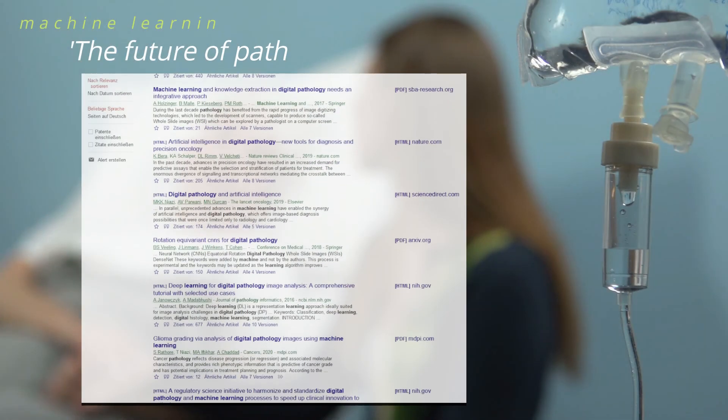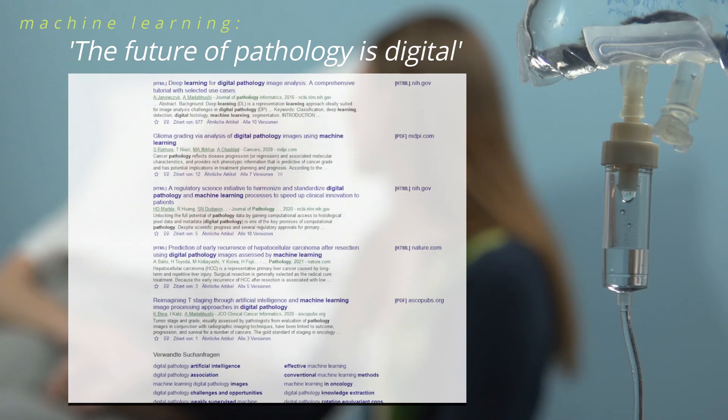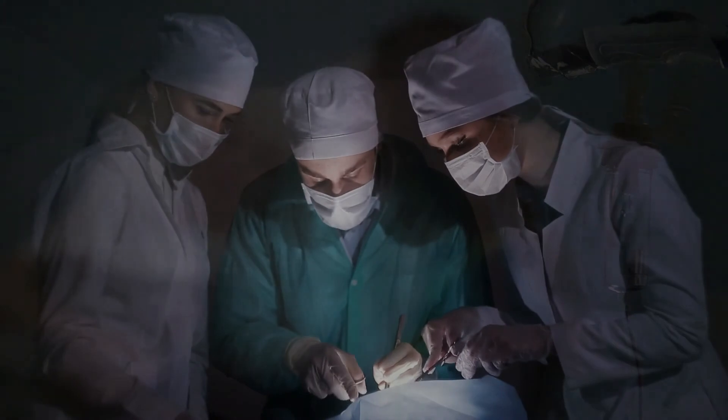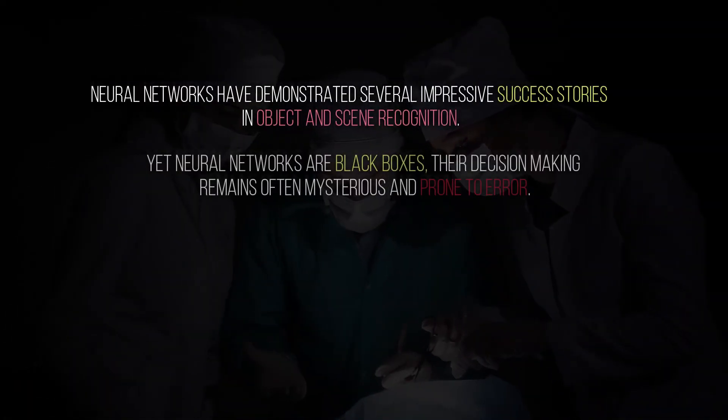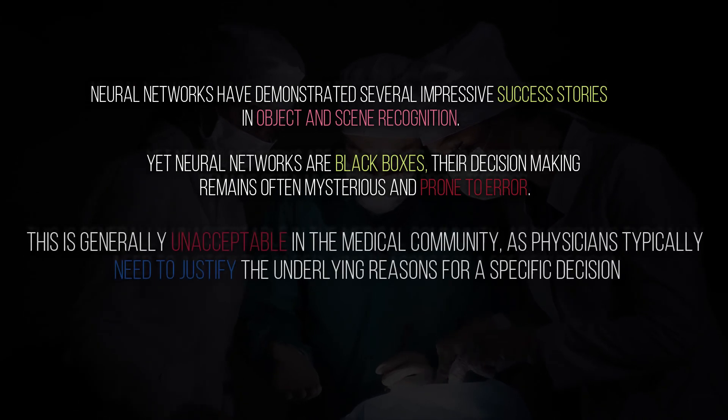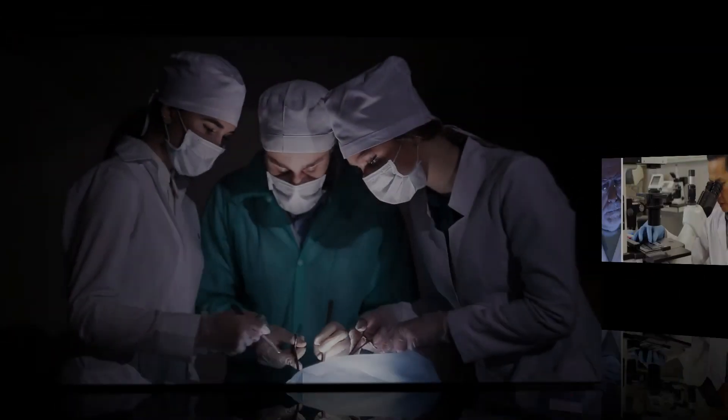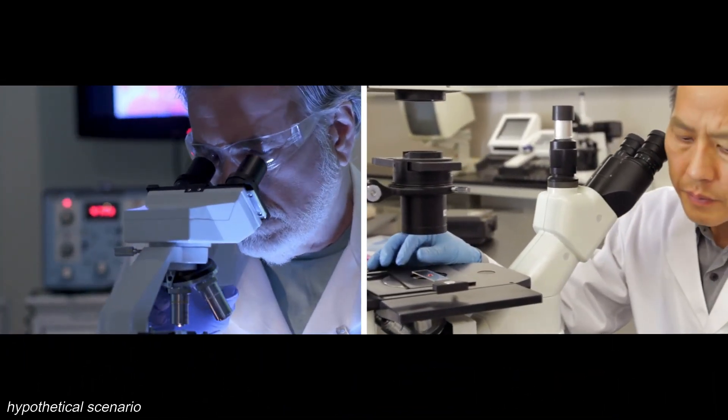Even samples that were held back from the training data and thus unseen by the algorithm can be classified correctly with ease. The study passes peer review, the paper gets published. What an amazing achievement one might think. But then, another hospital wants their tissue to be classified as well by the same neural network, and suddenly the algorithm cannot tell healthy from tumor cells at all. Why did it fail?